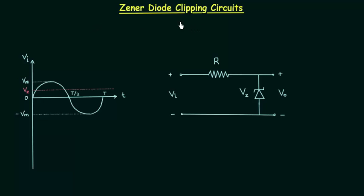We can also design a clipper circuit using a zener diode instead of a normal diode. You can see we are using a zener diode in place of a normal diode. Vz is the zener potential and we are measuring the output voltage across the zener diode.